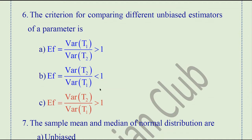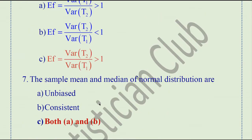Question number 6. The criteria for comparing different unbiased estimators of a parameter is: efficiency equals variance of t2 over variance of t1, which must be greater than 1. This is the criteria for checking the efficiency of an unbiased estimator.